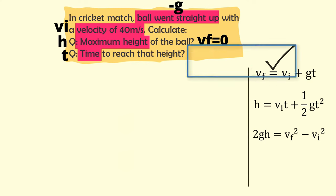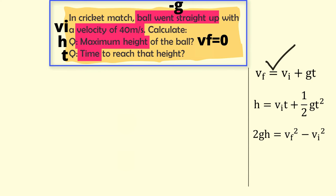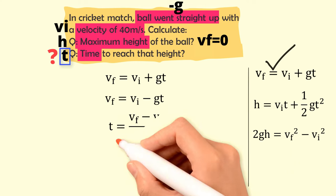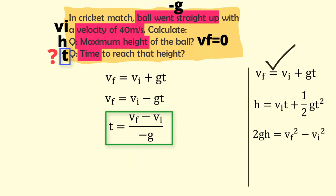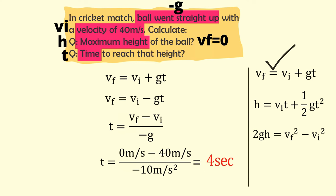We find this equation as our key using the brute force technique. Now apply it: since g is negative, vf = vi − gt. We need to find time t, so rearranging: t = (vf − vi) / (−g). Plugging in values: t = (0 − 40) / (−10) = 4 seconds. So the ball takes 4 seconds to reach maximum height.